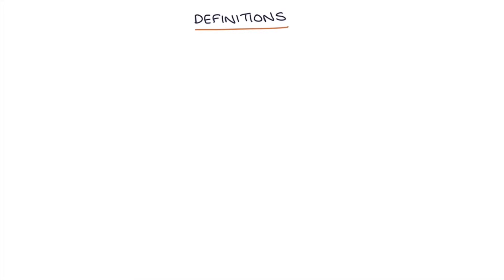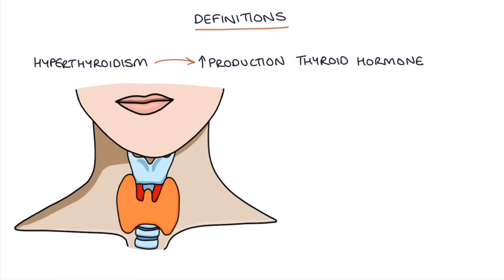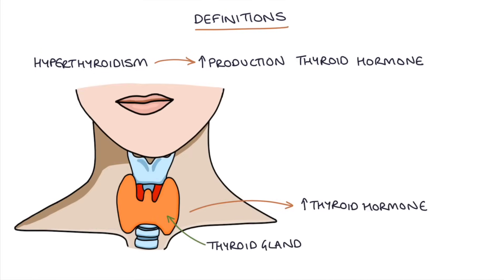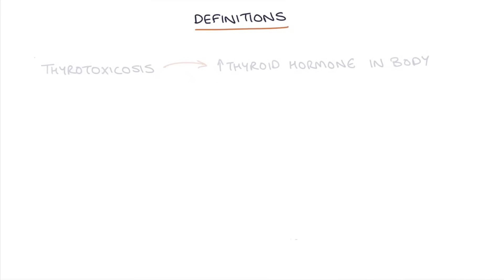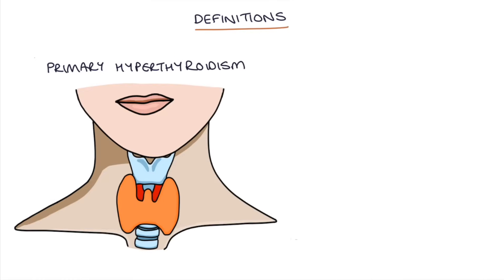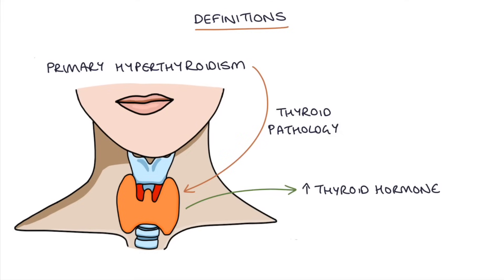Let's start with some basic definitions to help you understand some of the components of this topic. Hyperthyroidism is where there's overproduction of thyroid hormone by the thyroid gland. Thyrotoxicosis refers to an abnormal and excessive quantity of thyroid hormone in the body. Primary hyperthyroidism is due to thyroid pathology, so it's the thyroid itself that's behaving abnormally and producing too much thyroid hormone.